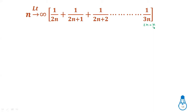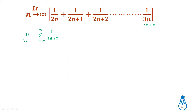So what is the n value here? We write it in summation format: summation of 1 divided by (2n + r), where r starts from 0 and the end value is n only, since 3n equals 2n plus n. So r goes from 0 to n. Taking the limit as n tends to infinity.